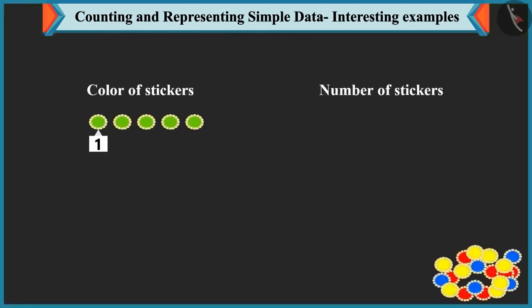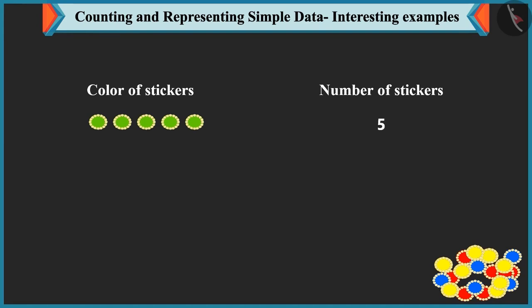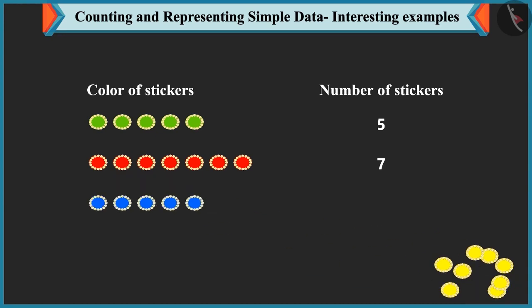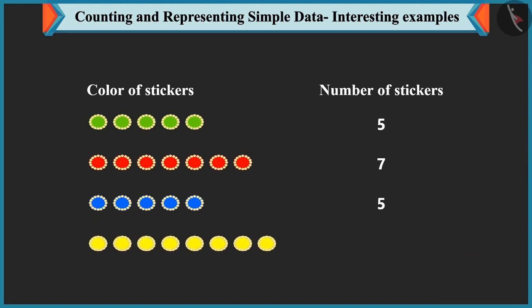Bubbly counts 5 green stickers and writes 5 against green. There are 7 red stickers, so she writes 7 against red. She counts 5 blue stickers and writes 5 against blue. Then she counts 8 yellow stickers and writes 8 against yellow.